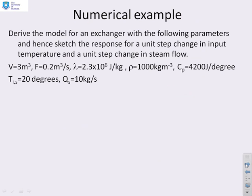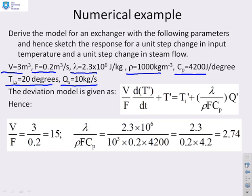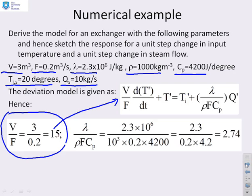Let's look at a numerical example. We've been supplied with the following data: volume V = 3 m³, flow rate F = 0.2 m³/s, latent heat lambda = 2.3 × 10⁶ J/kg, density rho = 1000 kg/m³, specific heat C_p = 4200 J/(kg·°C), steady state inlet temperature = 20°C, and steady state steam flow = 10 kg/s. We need to substitute all those numbers into the model. Using deviation variables, we first calculate V over F: that's 3 over 0.2, which is 15. We then need lambda over rho F C_p, and putting all the numbers in gives 2.74.